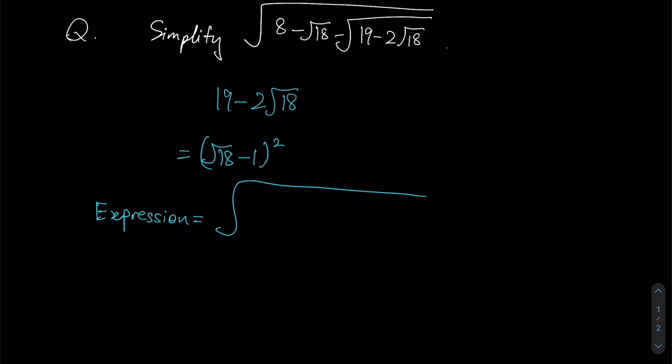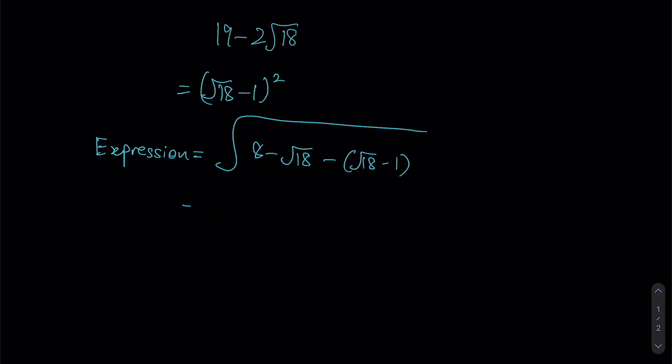I'll now have the big square root of 8 minus root 18. Now that we have resolved this, this will be minus root 18 minus 1, so this will be the square root of 8 minus minus 1, which is plus 1. In fact, I could write 9 minus 2 square roots of 18 just like this.